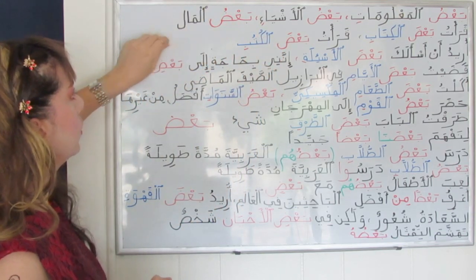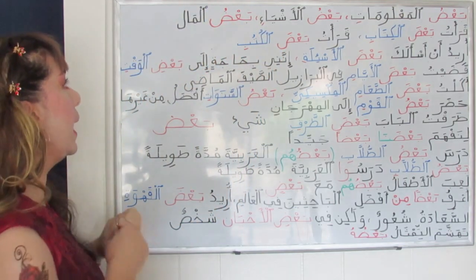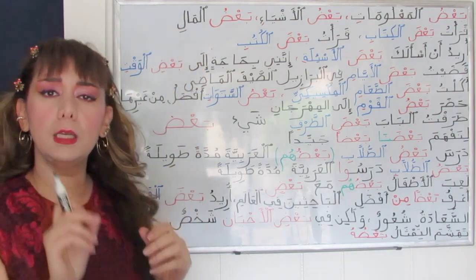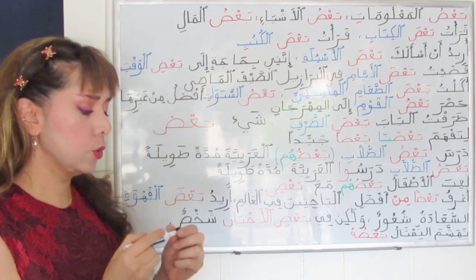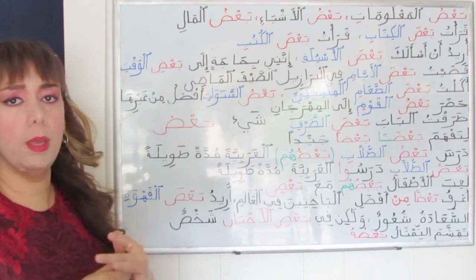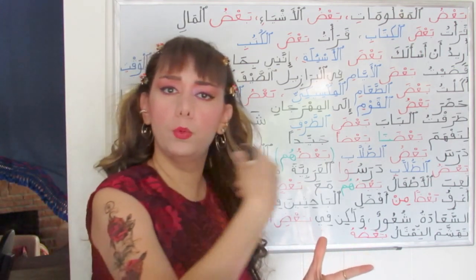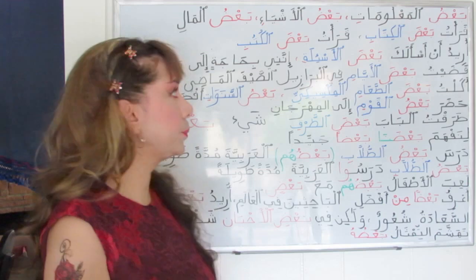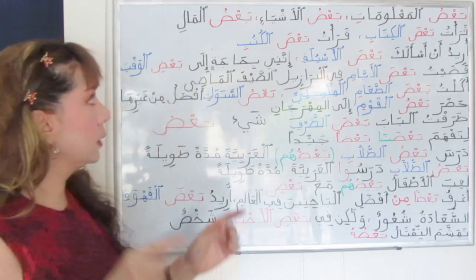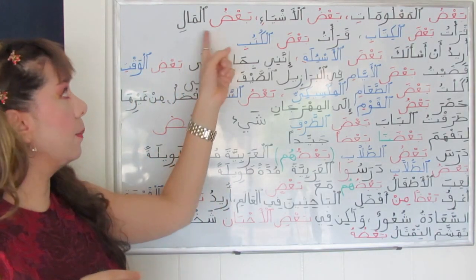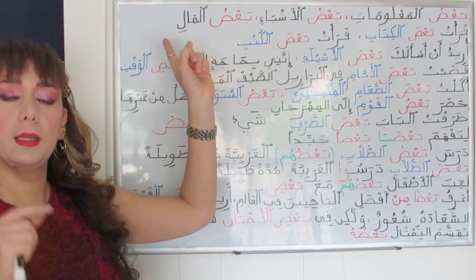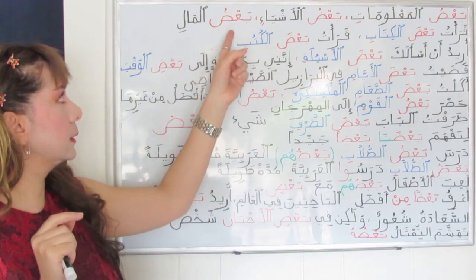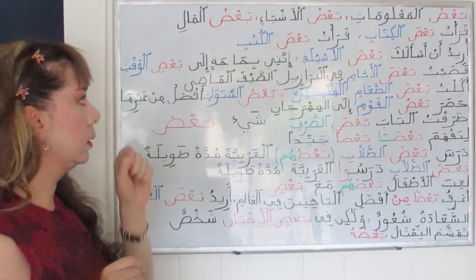Here, ba'du al-mali. Mal is a singular masculine noun. Ba'd may be followed by a plural noun or a singular noun — it doesn't matter. But it must be definite. Ba'du al-mali.